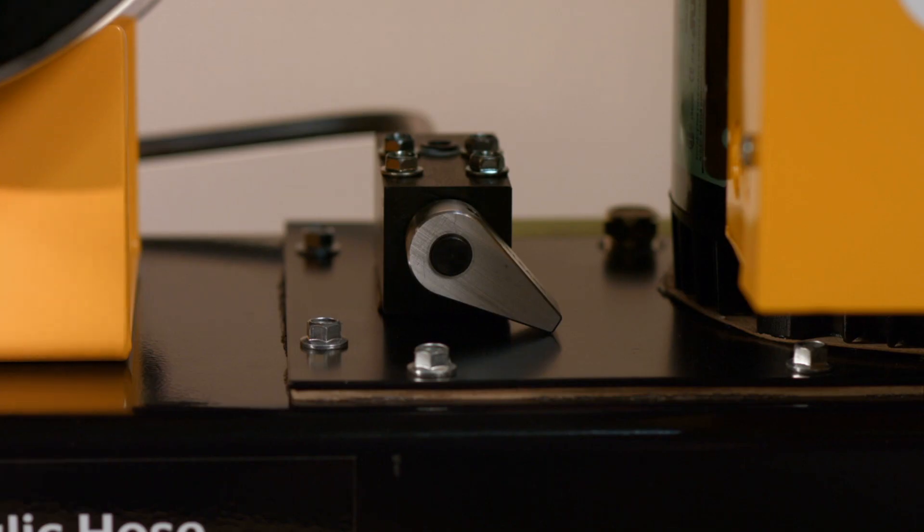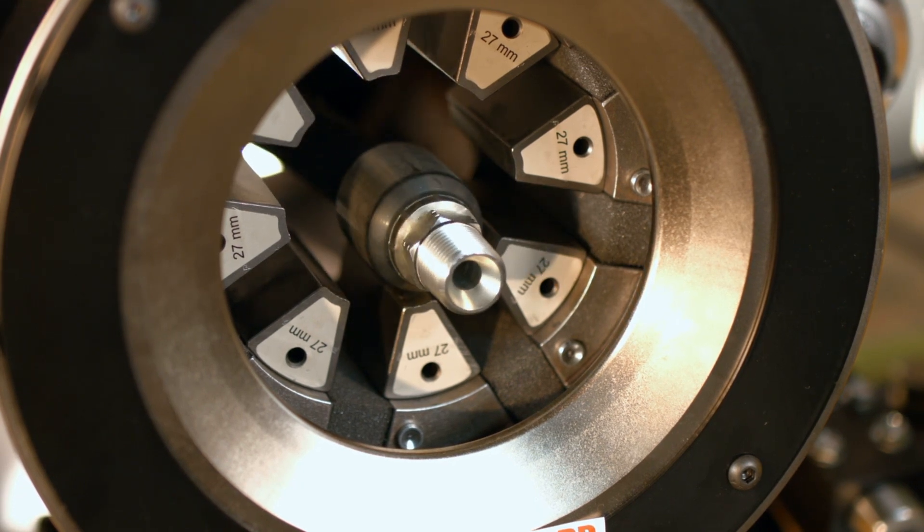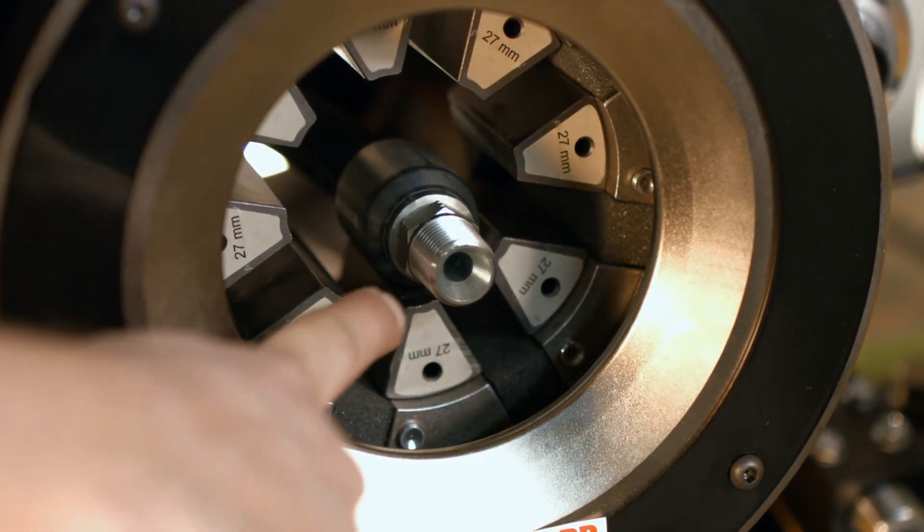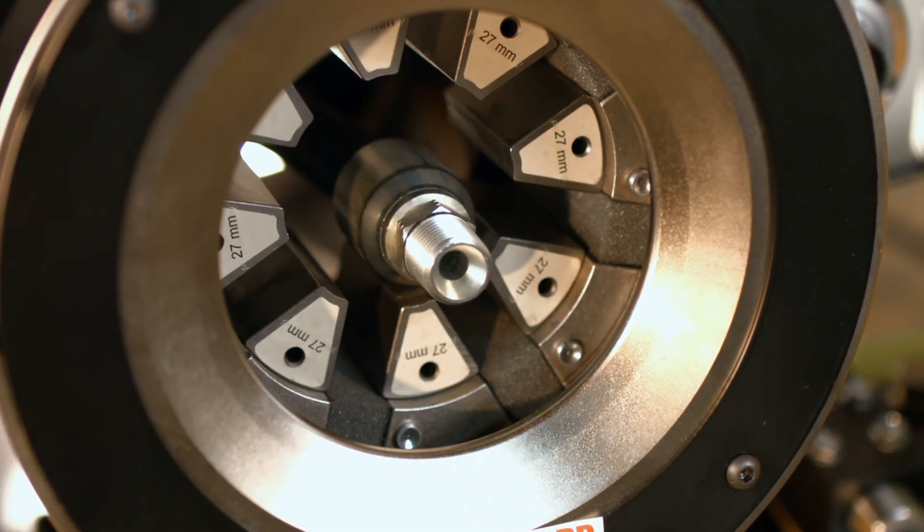With the valve in the release position, insert the hose assembly from either direction into the crimper, taking care not to disturb the die set. Hold the assembly in place until the crimp is complete.